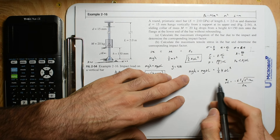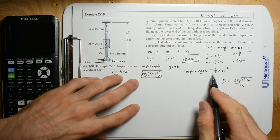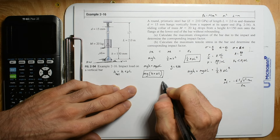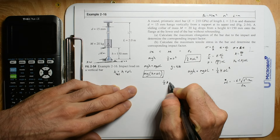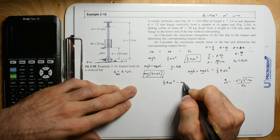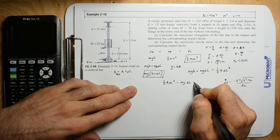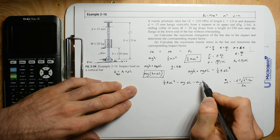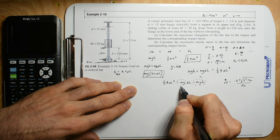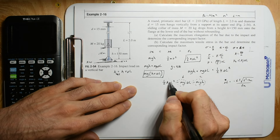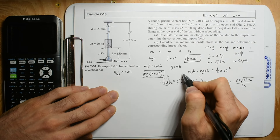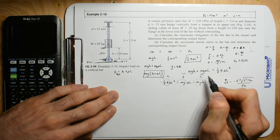We definitely have to solve this quadratic, so we get everything to one side. We have one half K times change in length squared, minus MG times change in length, minus MGH equals zero. This is my C term, this is my B term, and this is my A term. Just know that the B term and C term are negatives.